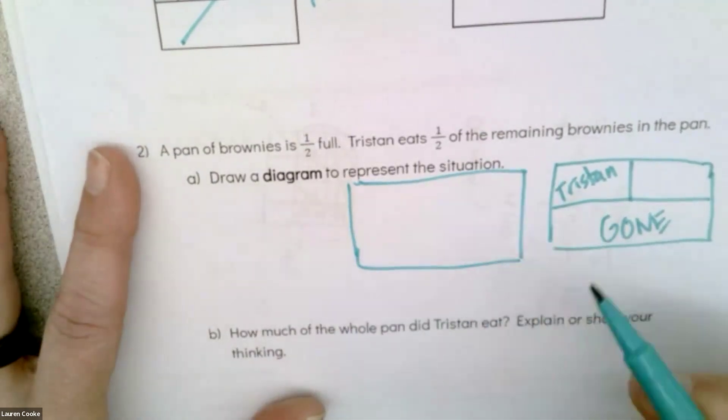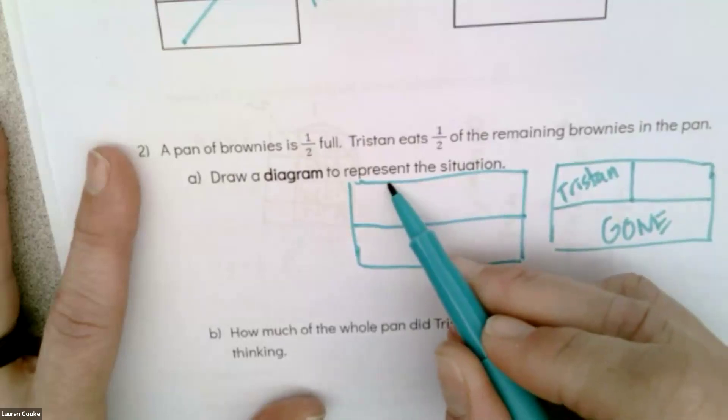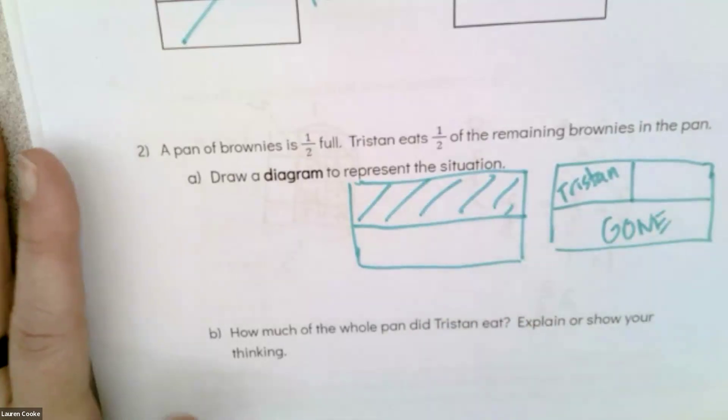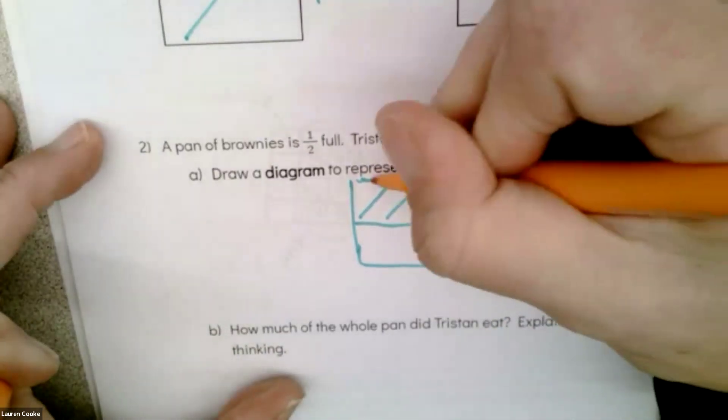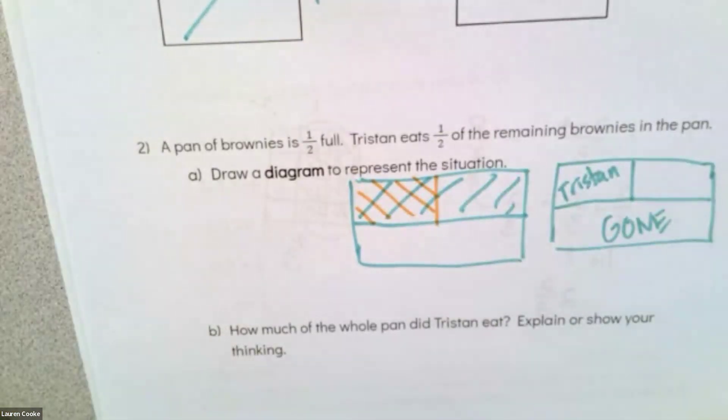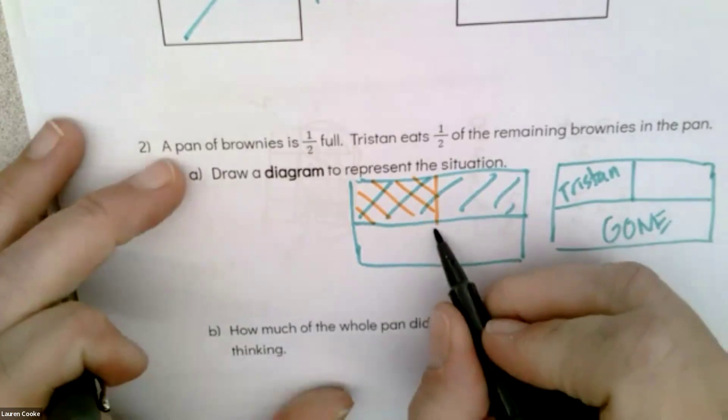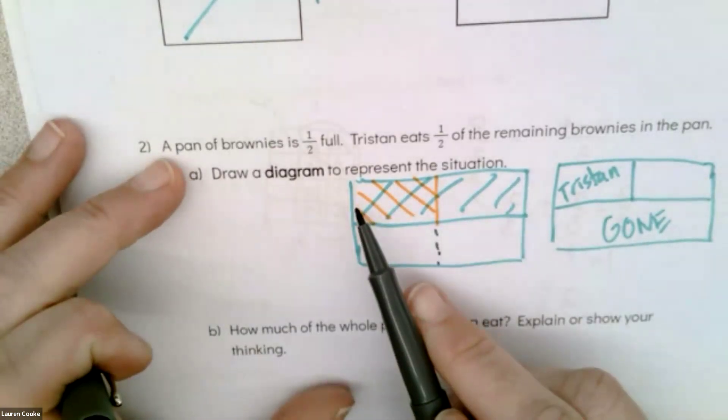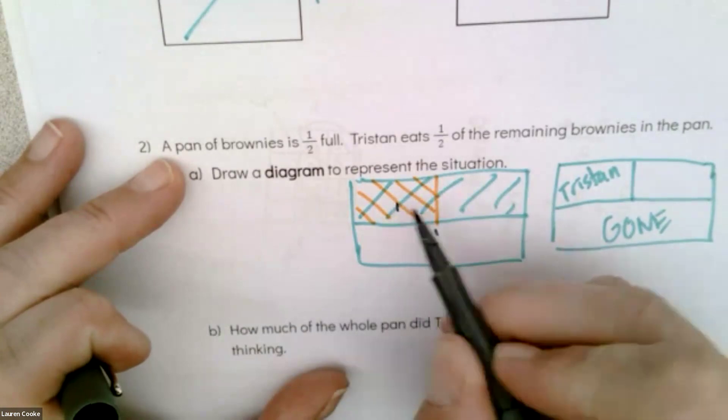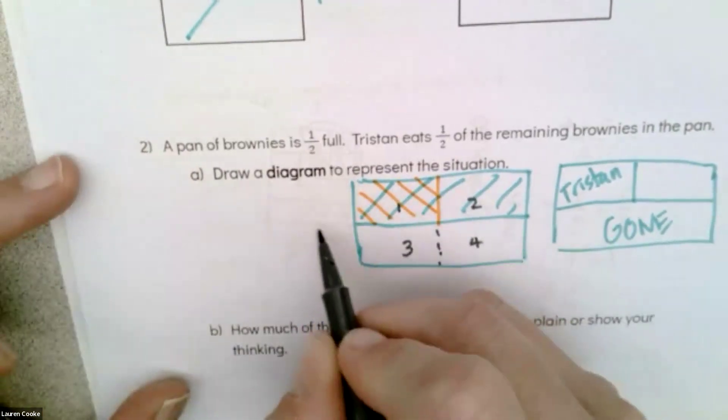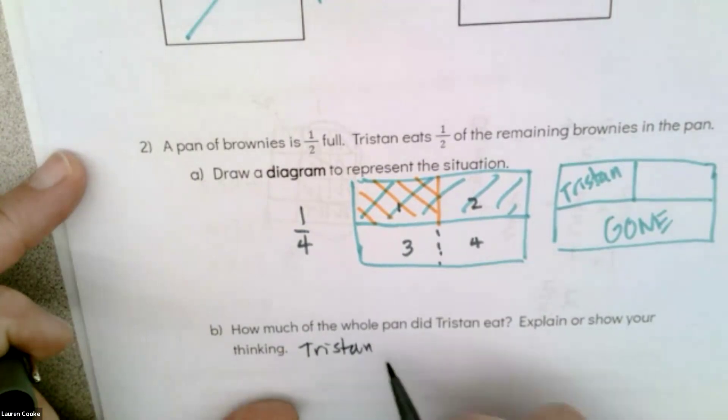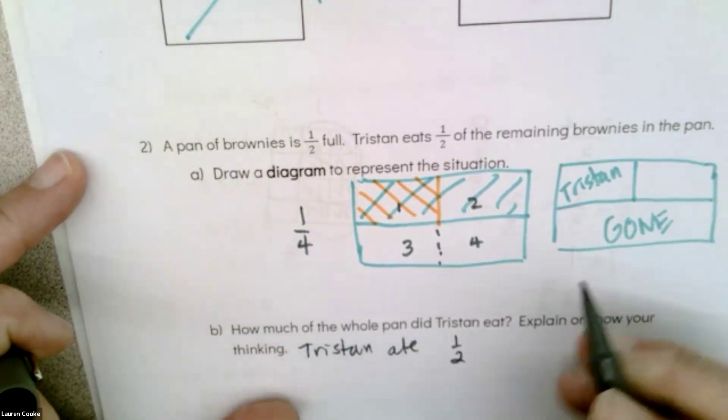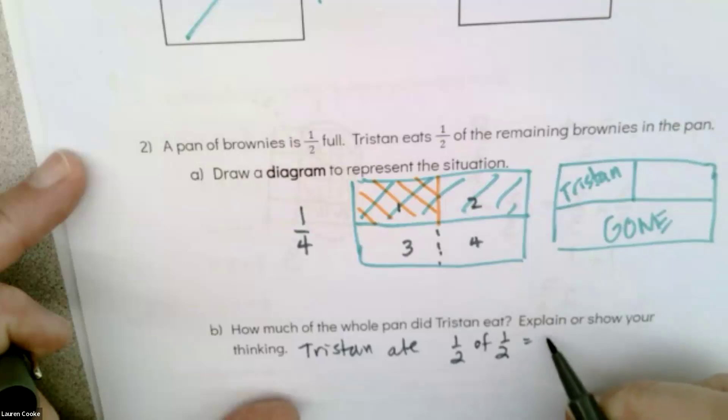I want to draw a diagram to represent this situation. I'm splitting it into half, and I have that amount left. Then I'm splitting the half into half, and I'm told that Tristan eats that amount. So what ends up happening is that the overlapped section is 1/4 of the entire pan. If Tristan ate 1/2 of 1/2, that is 1/4 of the pan.